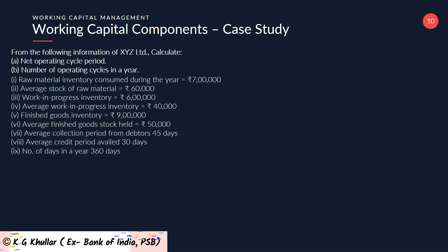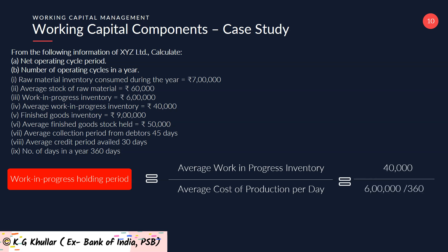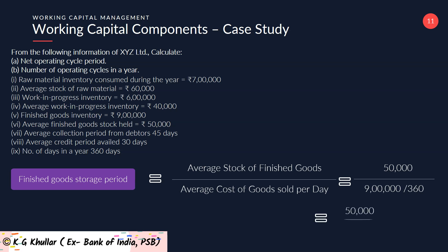Next, work in progress holding period W equals average work in progress inventory divided by average cost of production per day. That is 40,000 divided by 6 lakhs divided by 360, giving 40,000 divided by 1,666.6, which equals approximately 24 days. Then, finished goods storage period F equals average stock of finished goods divided by average cost of goods sold per day. That is 50,000 divided by 9 lakhs divided by 360, which equals 50,000 divided by 2,500, giving 20 days.